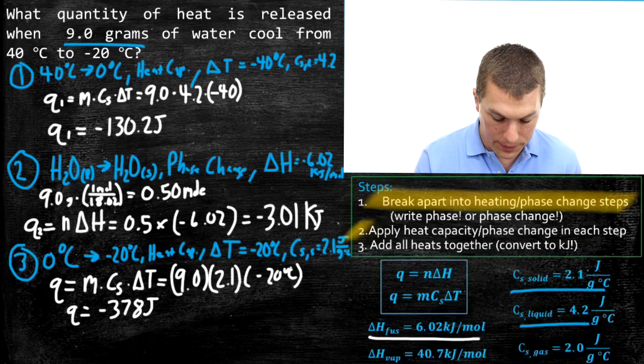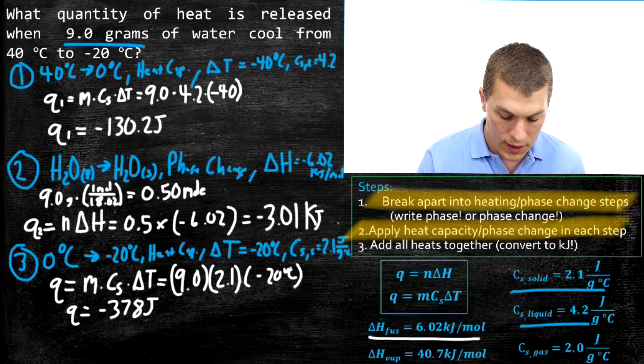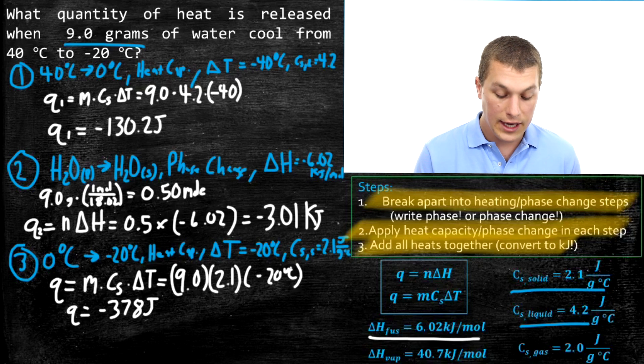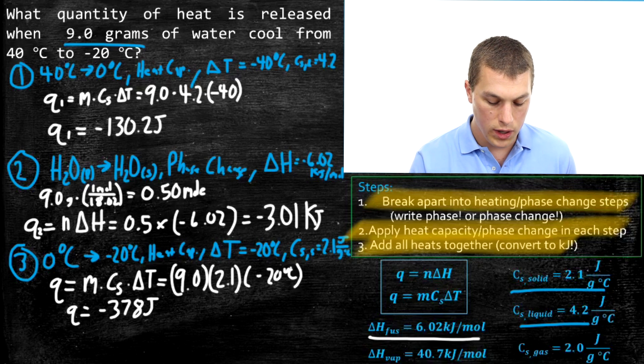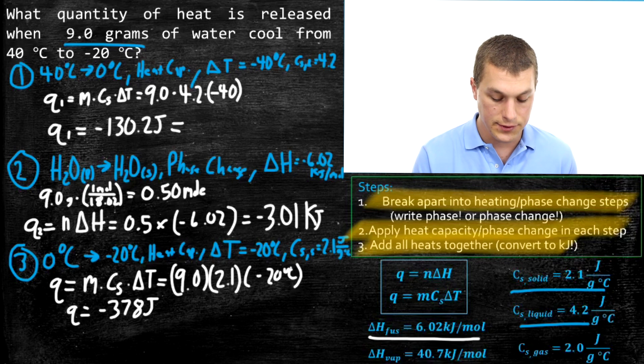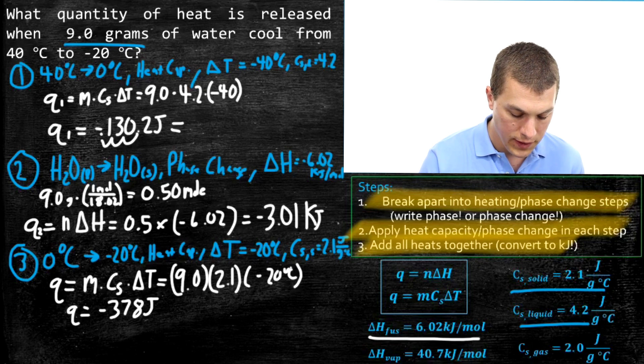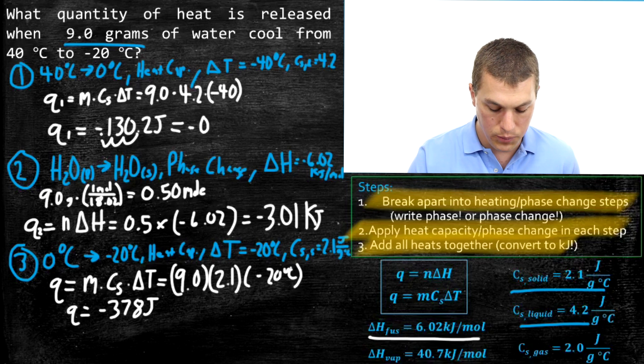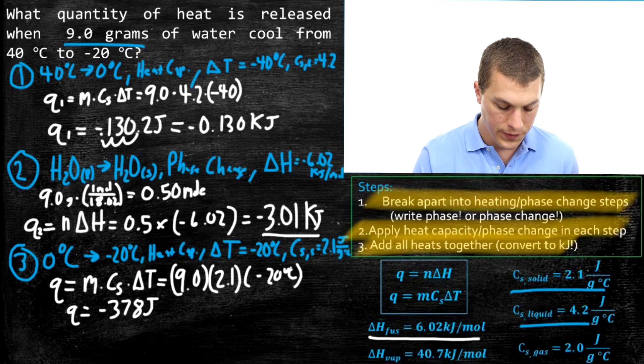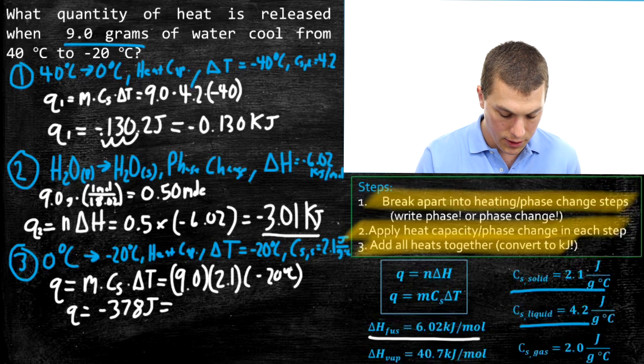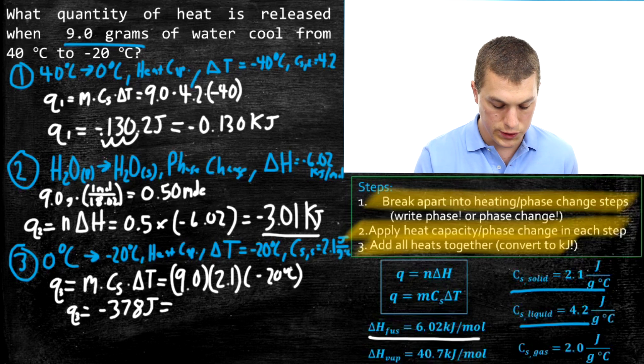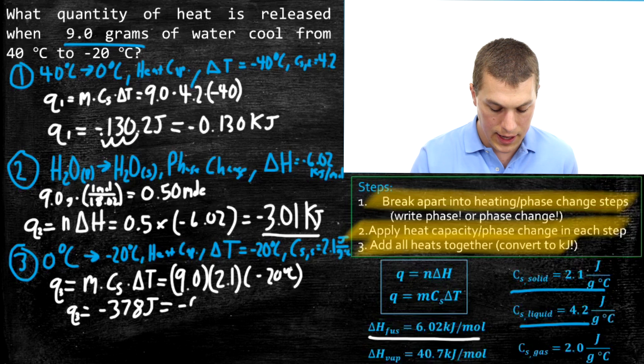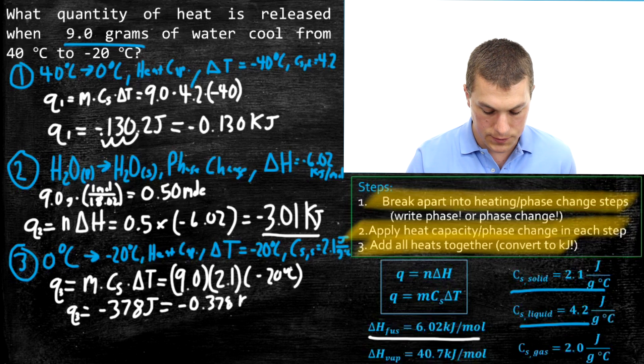The very last step, after I apply the heat capacity and phase changes in each step, is add all the heats together. But I'm going to have to convert to the common unit. Kilojoules is usually the easier one to do. If I go from joules to kilojoules, it's just dividing by a thousand or moving the decimal three times. One, two, three. That's because there are a thousand joules in a kilojoule. What we get for our top step is negative 0.130 kilojoules. That's heat for step one. Step two is already in kilojoules, so we're good there. Step three needs to go to kilojoules also. I move the decimal over three times and I get negative 0.378 kilojoules.